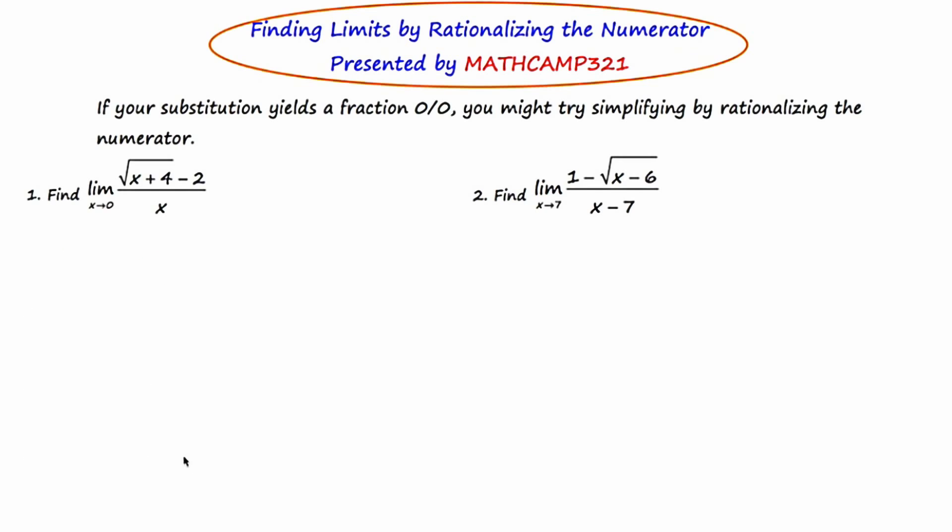And we're going to engage in this process called rationalizing the numerator. So what I'm going to do is multiply both the top and the bottom of this fraction by a useful form of 1, namely the conjugate of the numerator. So it's going to be the square root of x plus 4, but plus 2 instead of minus 2. And I'm going to do that on the top and on the bottom.